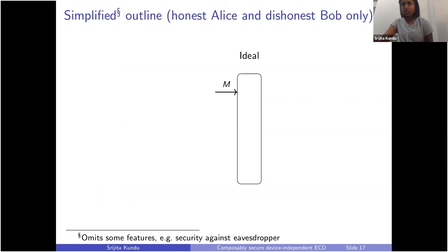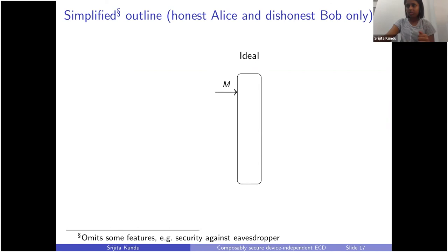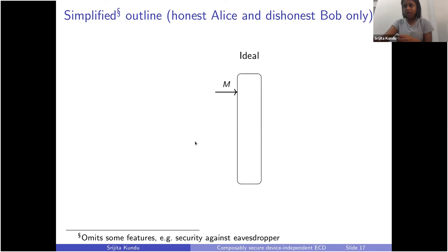Let me describe the ideal functionality we define. This is for a simplified case where we don't consider a third party. The ideal functionality is a black box where Alice enters a message she wants to reveal to Bob at some point. Alice's interfaces are on one side and Bob's interfaces are on the other side — everything input on Alice's side are inputs from Alice, everything output on Alice's side are outputs to Alice, and outputs on Bob's side are outputs to Bob.